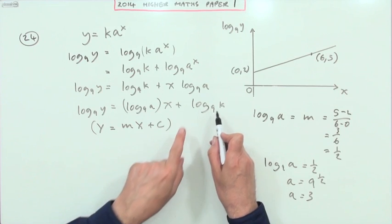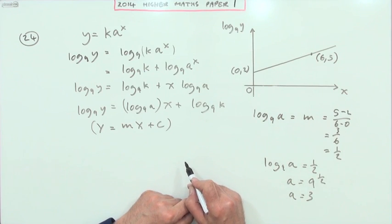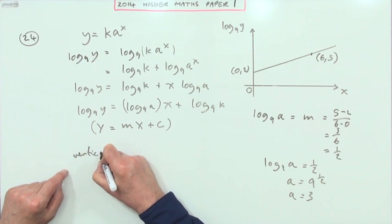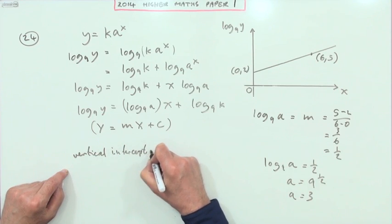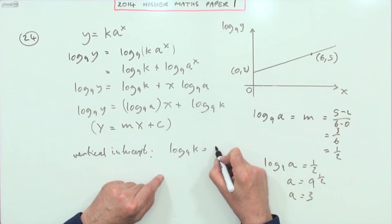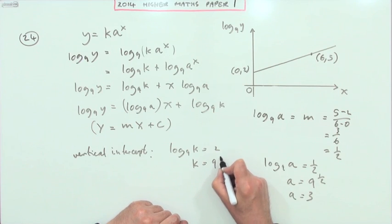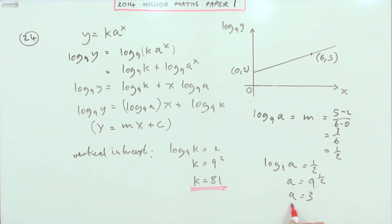The other one is the number at the end must be where it cuts the vertical axis. So for the vertical intercept I would have log base 9 of k equals 2, in which case k equals the inverse of log base 9, which is 9 to the power 2. So k is 81. And that's all it asks for: what's the value of k and what's the value of a.